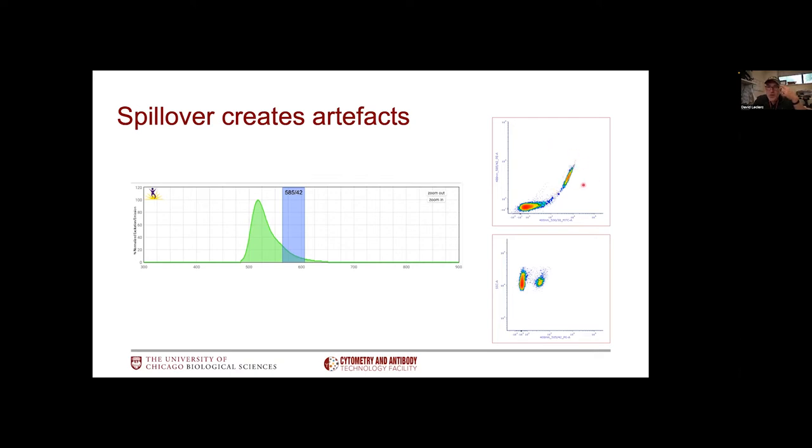In general, when you see a diagonal, that indicates that as one marker gets brighter and brighter, it bleeds more and more in the secondary channel. Another way of looking at it is looking for these artifact positive fractions that are biologically irrelevant. If you see that next to your negative population, that typically indicates some kind of problem with the overlap that has not been corrected properly.